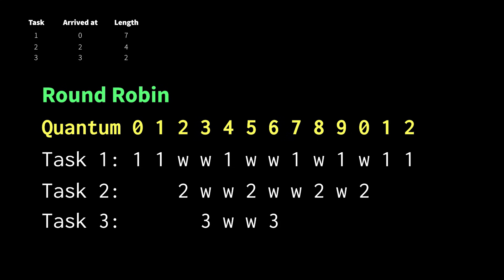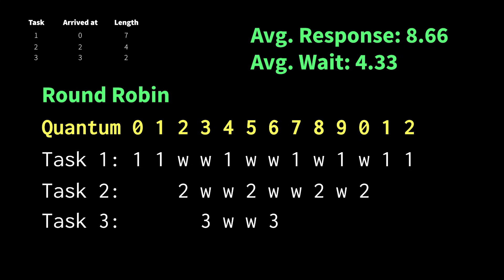For round robin, the smaller tasks don't have to wait until the first task is done. In this case, our average numbers come out about the same, but things are very different for the individual processes.